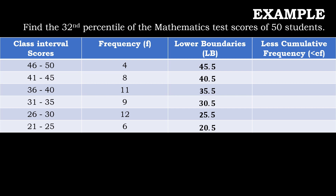For the less cumulative frequency, what we're going to do is copy the frequency of the least class interval, which is 21 to 25 with the frequency of 6. Therefore, we will just copy 6, and then add the next frequency of the class interval, which is 12. Thus, 6 plus 12 is equal to 18. Then 18 plus 9 is 27. 27 plus 11 is 38. 38 plus 8 is 46. And 46 plus 4 is equal to 50.